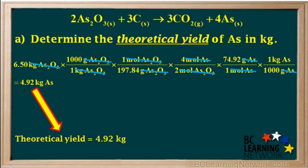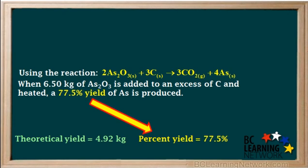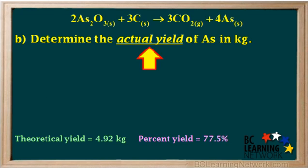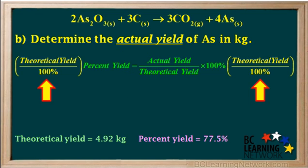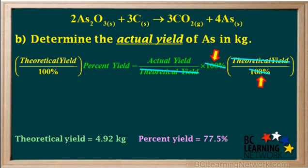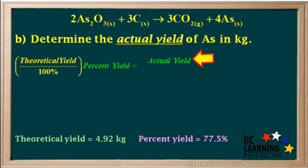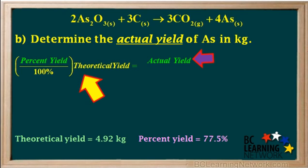The question had also stated that the percent yield was 77.5%, so we'll note that down. In part B, we're asked to determine the actual yield of arsenic in kilograms. The formula for percent yield is percent yield equals actual yield over theoretical yield times 100%. But here we're asked for the actual yield, so we must rearrange the equation to solve for actual yield. We take the equation and multiply both sides by the theoretical yield over 100%, then cancel out the theoretical yield and 100% on the right side. That leaves us with actual yield, which is equal to percent yield over 100% times theoretical yield.